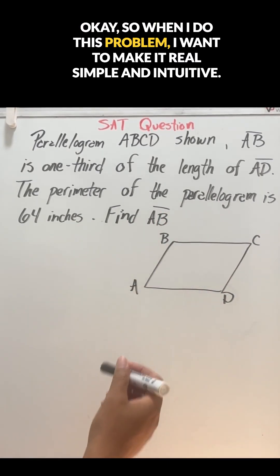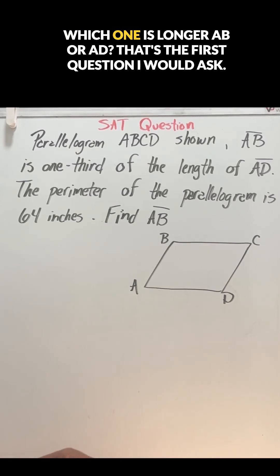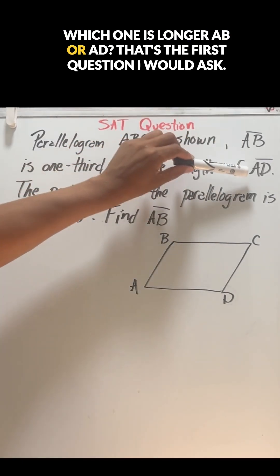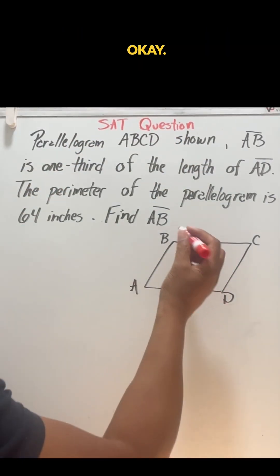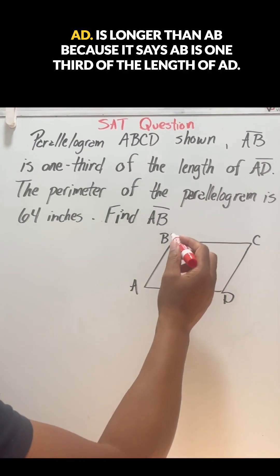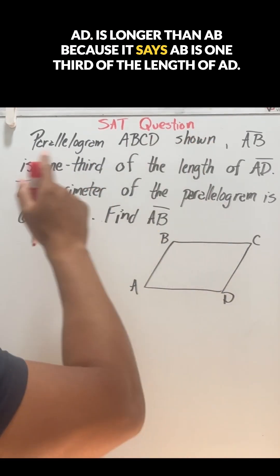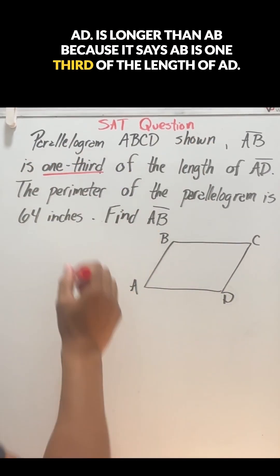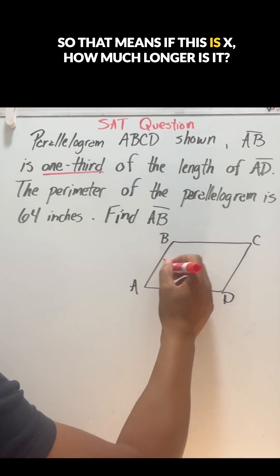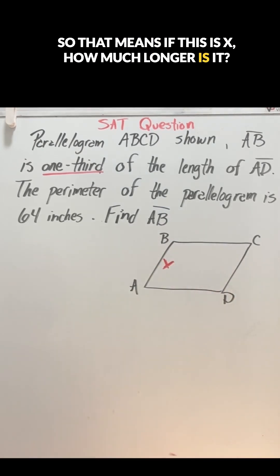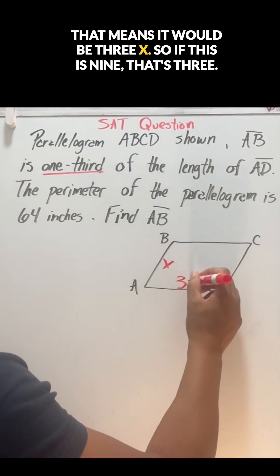When I do this problem, I want to make it real simple and intuitive. Which one is longer, AB or AD? That's the first question I would ask. AD is longer than AB because it says AB is one third of the length of AD. So that means if AB is X, it says one third, meaning AD would be 3X.